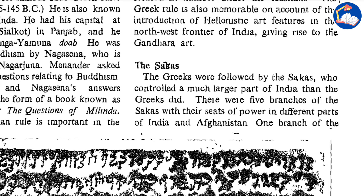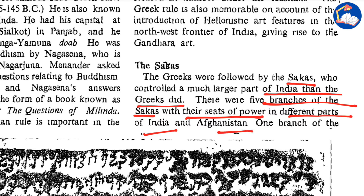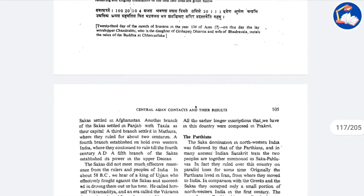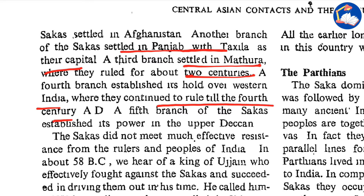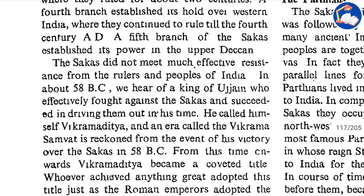The Greeks were followed by the Sakas, another tribe who controlled a much larger part of India than the Greeks did. There were five branches of the Sakas with their seats of power in different parts of India and Afghanistan: one branch settled in Afghanistan; another settled in Punjab with Taxila as their capital; a third branch settled in Mathura where they ruled for about two centuries; a fourth branch established its hold over western India where they continued to rule till the fourth century AD; and the fifth branch established its power in the upper Deccan, mainly in the north Indian and Afghanistan-Pakistan region.